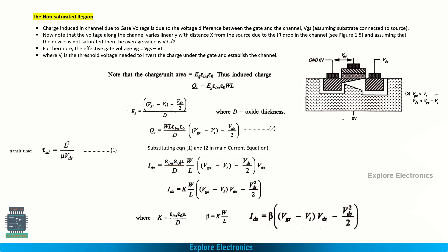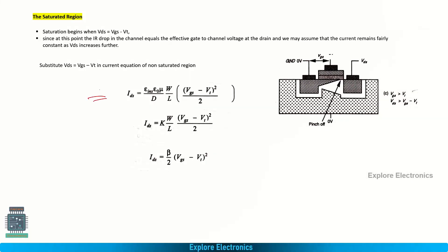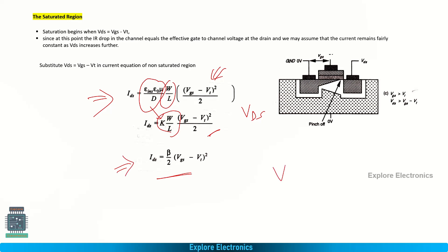For the saturation region, the electric field expression changes. Since VDS no longer controls the current after pinch-off, VDS drops out of the electric field term. The current expression becomes: IDS = K × (W/L) × (VGS − VT)² / 2. Writing K × (W/L) as beta, this simplifies to: IDS = (beta / 2) × (VGS − VT)². This is a constant current — even if VDS increases further, IDS remains constant and depends only on VGS.